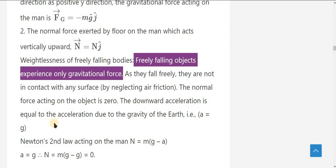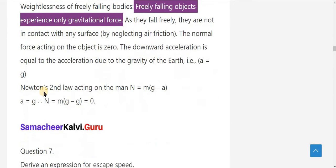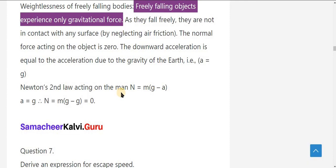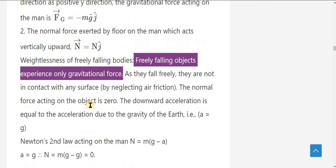The downward acceleration is equal to the acceleration due to gravity of the earth. That is, a is equal to g. According to Newton's second law acting on the man, N is equal to m into g minus a, where g is gravitational force minus acceleration. So when a becomes g, the equation becomes N is equal to m into g minus g. That means normal force is equal to zero.